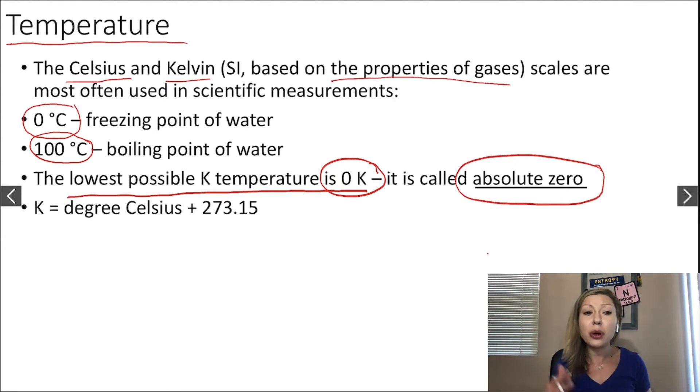How do you convert between Kelvin and Celsius temperatures? To get Kelvin temperature, you simply take the degrees in Celsius and add 273.15.